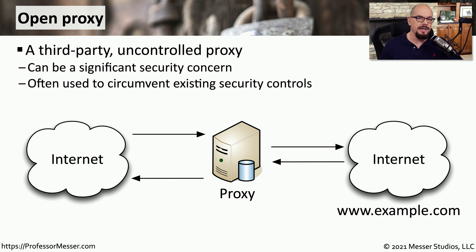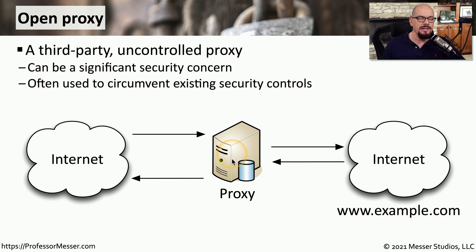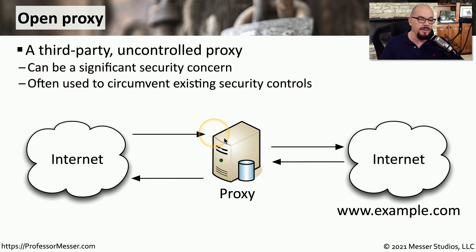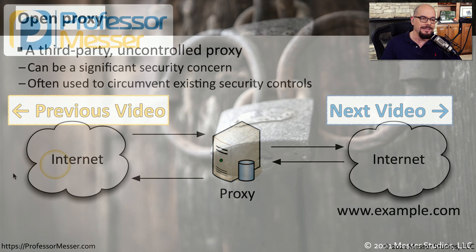In some environments there are very tight security controls, and one of the ways people can get around those controls is to communicate to a third-party proxy controlled by someone else. We refer to these as open proxies because they are installed on the internet for anyone to use. This is a significant security concern, primarily because most people are using these proxies to circumvent existing security controls. We're also concerned about what the proxy may be doing to the data being sent or received — it could add additional code or even malicious code into the response and send that directly to your users.